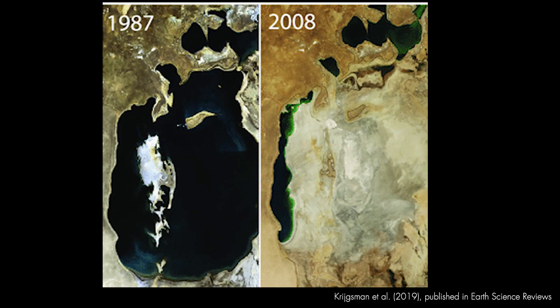But we don't even need to look into the geological record to see the importance of sea level change in this region. Looking at the Aral Sea, it's all but vanished in a matter of decades. These two photos, for example, were taken only 21 years apart and it's disappeared entirely during my lifetime.